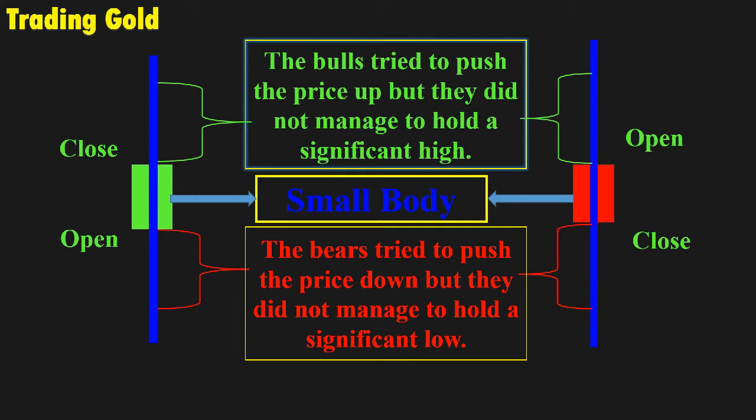The size of shadows can vary. Spinning tops signal indecision. The smaller the body, the less direction the market has.